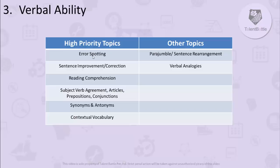When studying verbal ability, first focus on grammar rules and techniques. For the vocabulary part, the more words you know, the easier that section will be. For verbal ability, make sure you solve at least 50 to 60 problems per topic, because a verbal ability question won't take more than 15 seconds, making it possible to practice a high volume and get a strong grip.